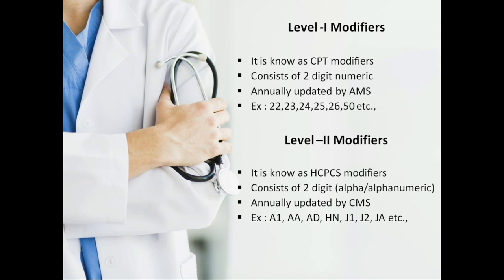Some Level 1 CPT modifiers include 22, 23, 24, 25, 26, and many more. Level 2 modifiers are known as HCPCS modifiers, consisting of two-digit alpha or alphanumeric characters, and are annually updated and maintained by CMS — the Centers for Medicare and Medicaid Services. Examples of HCPCS modifiers include A1, AA, AD, H1, HN, JA, J1, J2, and many others.